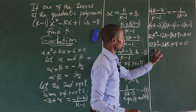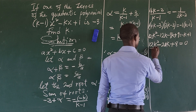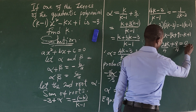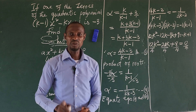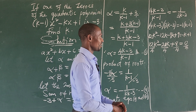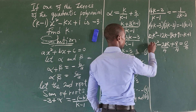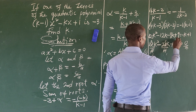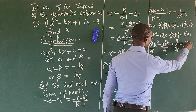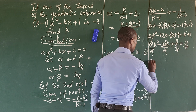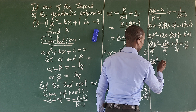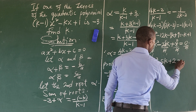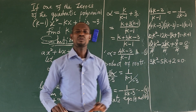We can divide through by 4, giving us 3k squared minus 5k plus 2 equals 0. This is a quadratic equation in k.